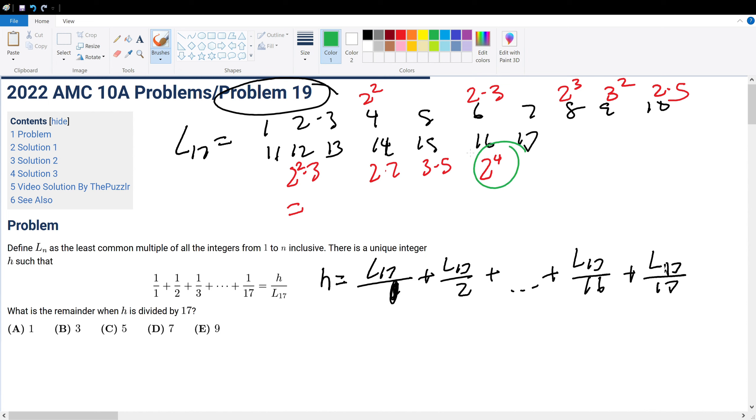So, when we write the least common multiple, let me change colors a bit. 2, our highest power is 2 to the power of 4. So, 2 to the power of 4 times 3 to the power of 2 times 5 times 7 times 11 times 13 times 17. Okay, cool. That's our least common multiple calculated.